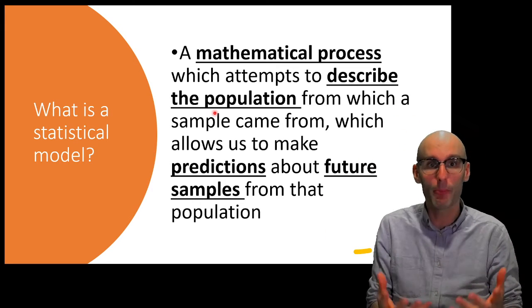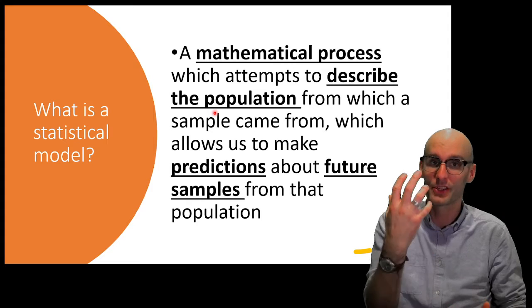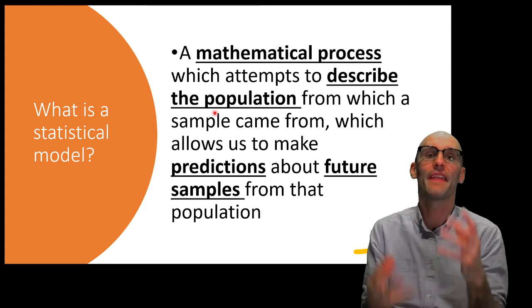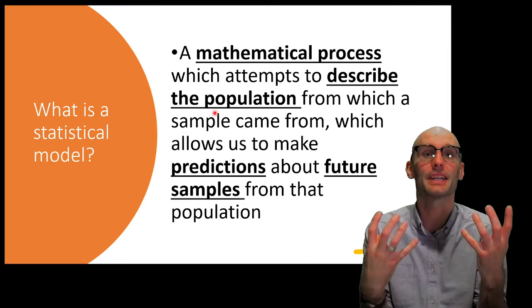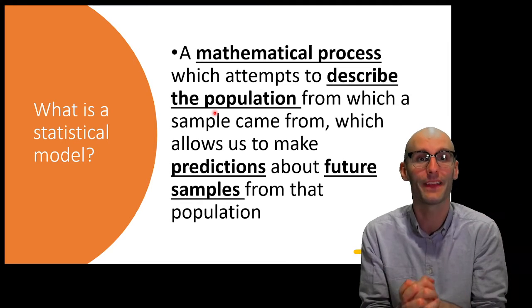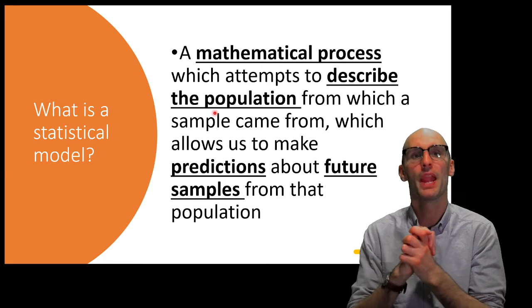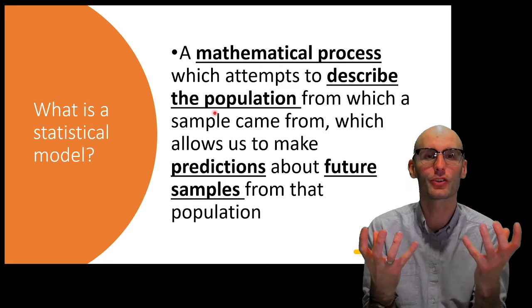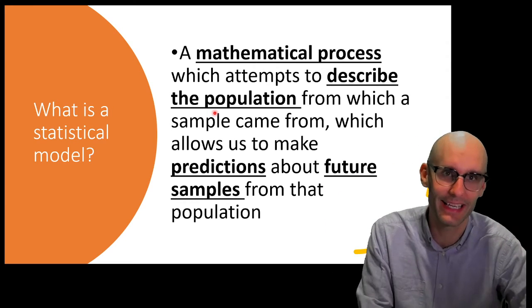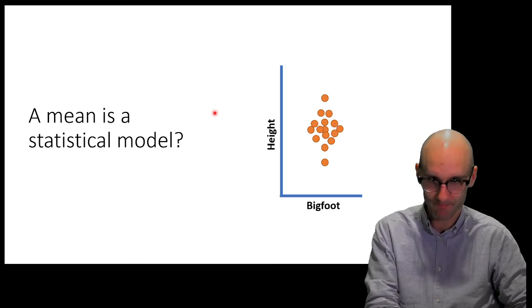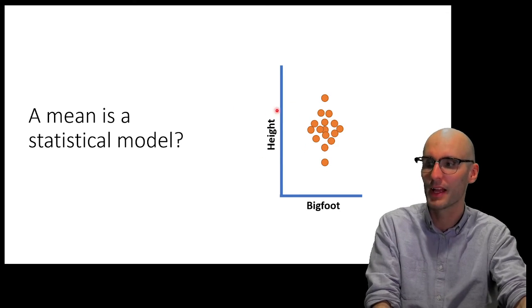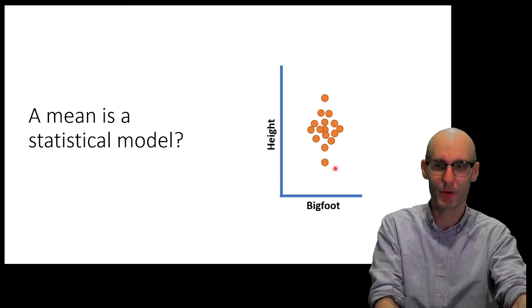So when Pfizer sampled over 40,000 people to give the Pfizer vaccine and 40,000 people to give the placebo they then ran statistical tests to predict what would happen if we gave it to a different sample. More people than 40,000. Perhaps millions of people. And so, the statistical models were about making predictions of the future people that get the vaccine, for example. So, in light of that, is a mean a statistical model?